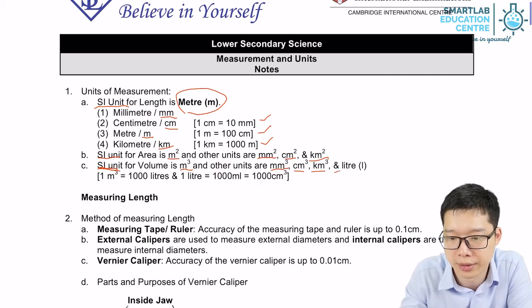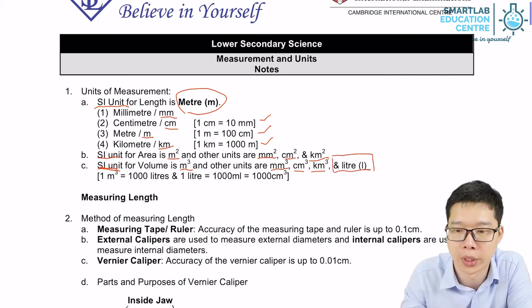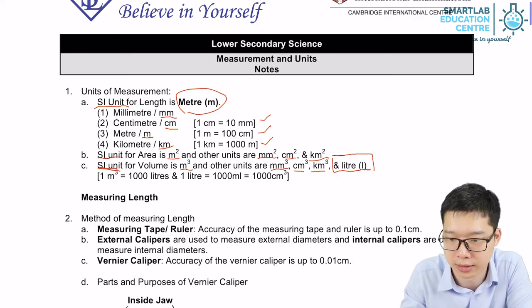And of course, there's another special unit for liquid, volume of liquid: liter, which means dm cube.